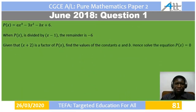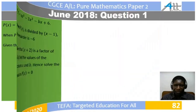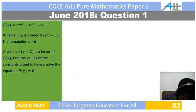Question 1: P of x equals ax cubed minus 3x squared minus bx plus 6. When P of x is divided by x minus 1, the remainder is negative 6. Given that x plus 2 is a factor of P of x, find the values of the constants a and b, hence solve the equation P of x equals 0.